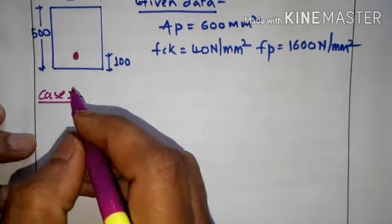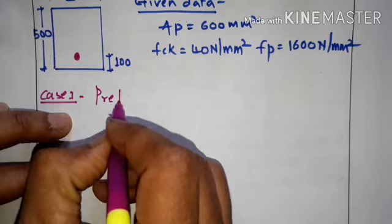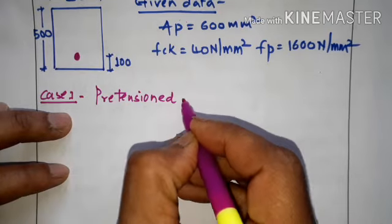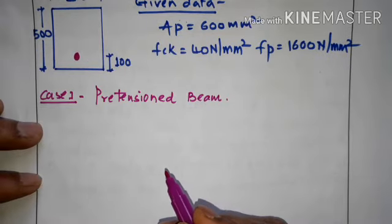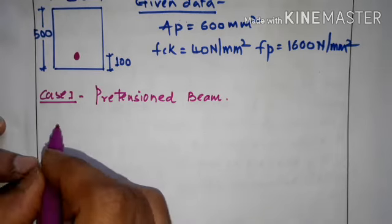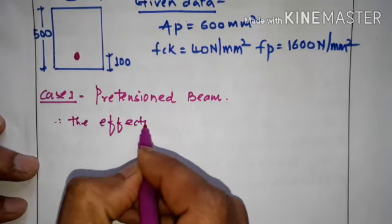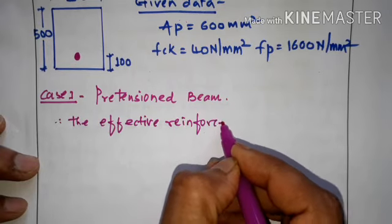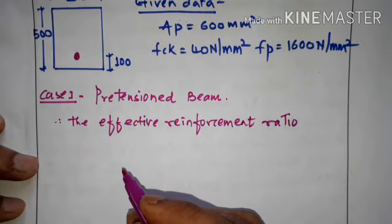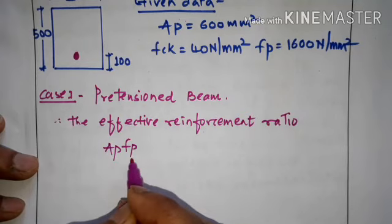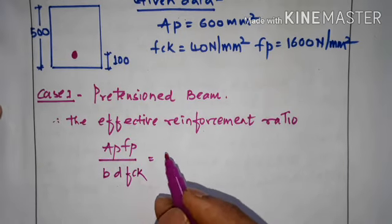For Case 1, the pre-tensioned beam, we need to find the effective reinforcement ratio first. The effective reinforcement ratio is AP × FP divided by B × D × FCK.